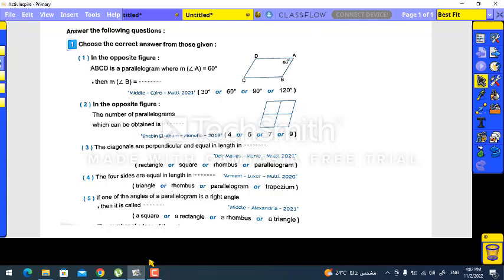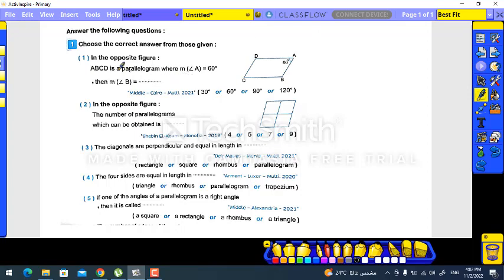Good morning junior six, let's now revise on the lesson of shapes. Let's start with the first question. ABCD is a parallelogram where measure of angle A equals 60 degrees. Then measure B - as we know, B is adjacent to A, so I can get it by subtracting from 180.